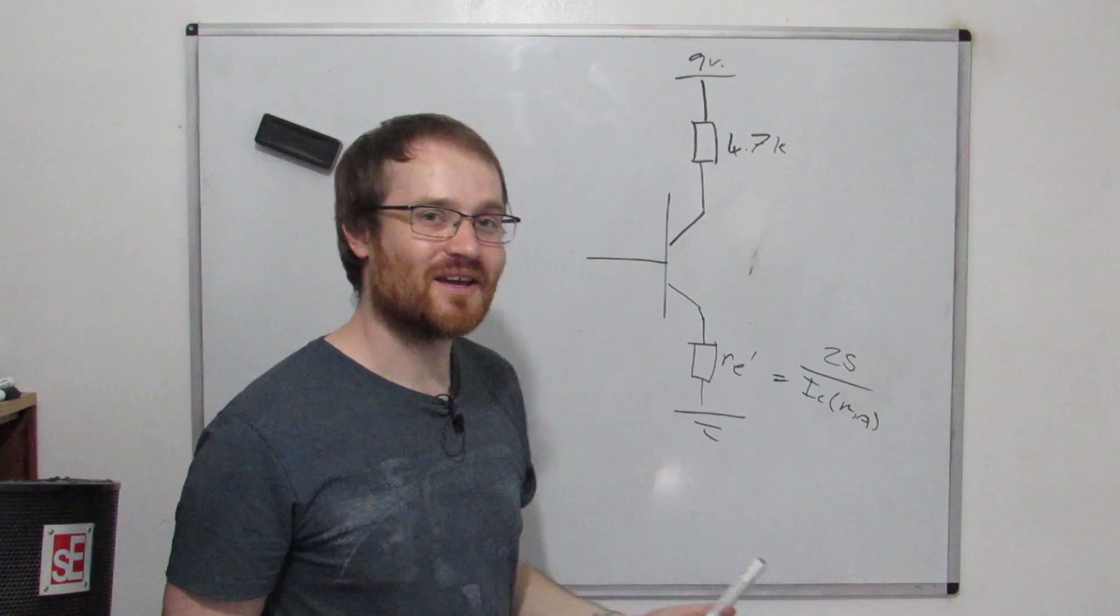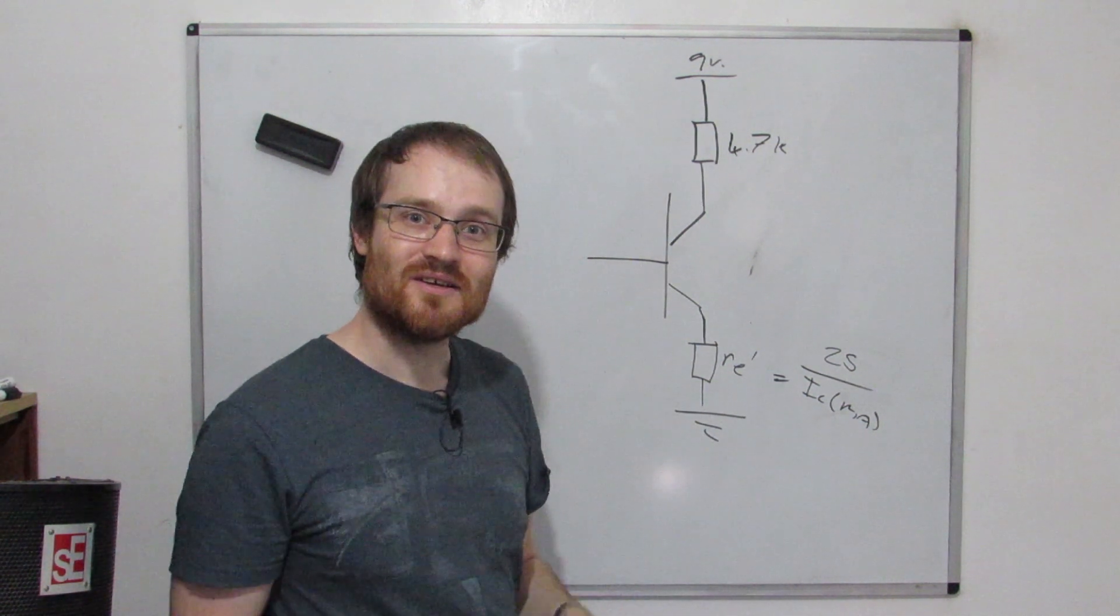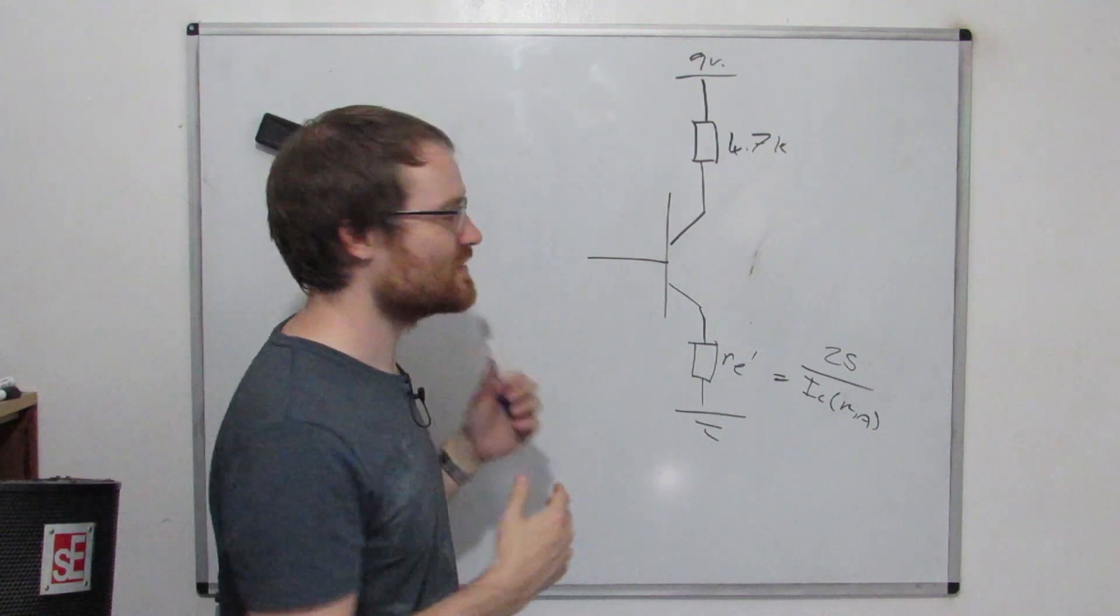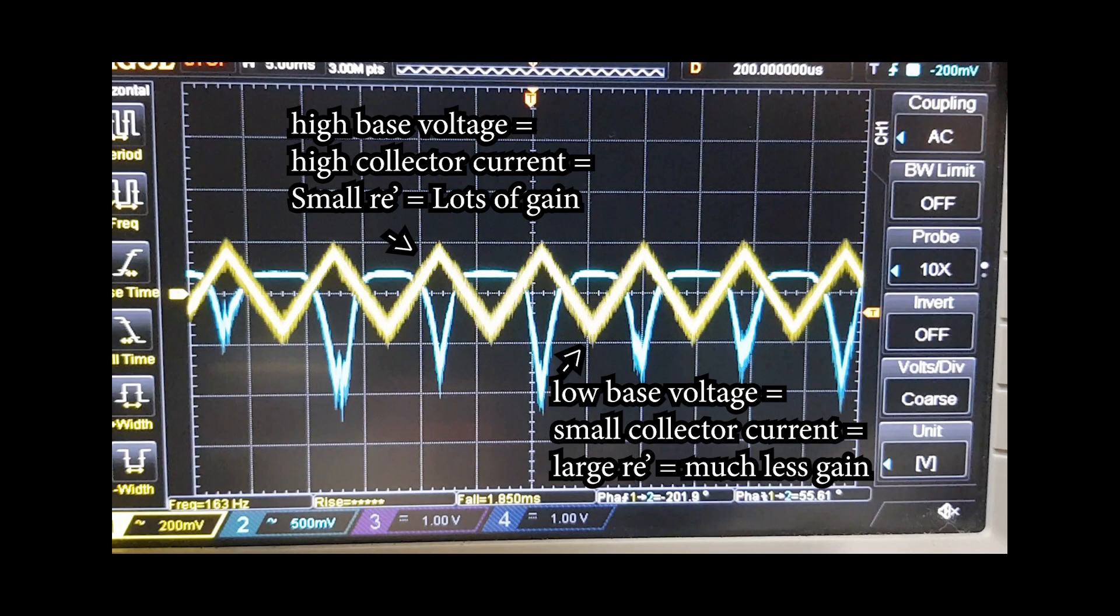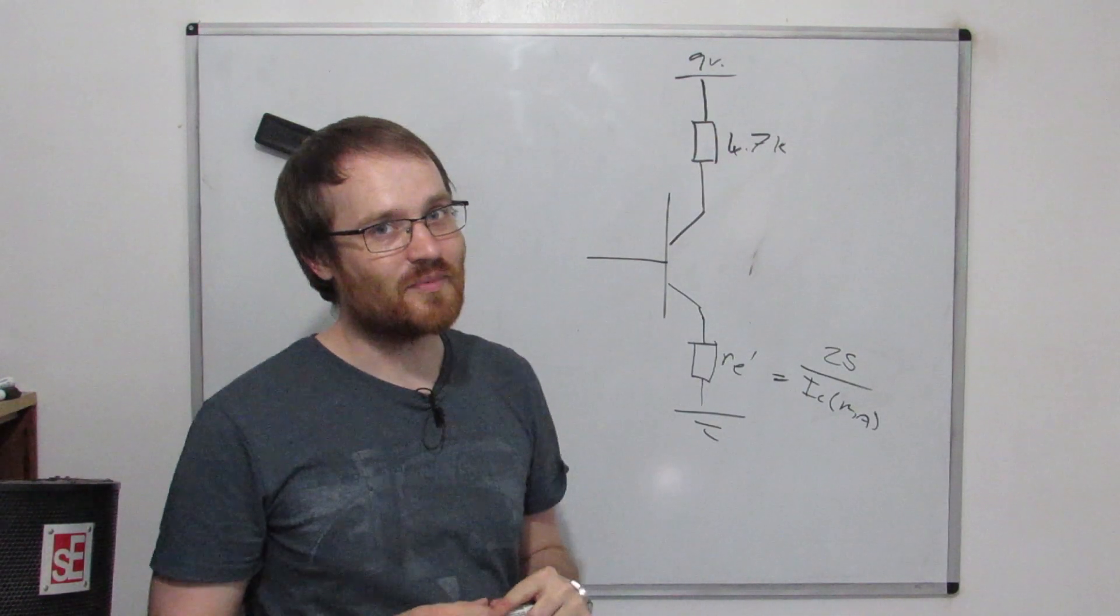So the gain of the circuit is varying with the collector current. That's why when you saw this waveform, those peaks are where it's a high gain and where it flattens out is where it's low gain. That's what's going on there and that's the kind of thing that can happen if you forget about this little RE prime.